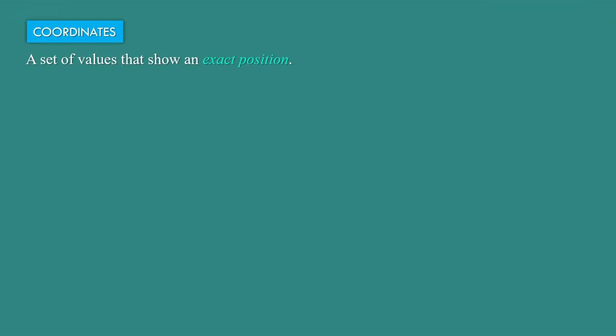Degree of Freedom. At first, we need to know about coordinates. A set of values that show an exact position is coordinates. If we consider a point P in a two-dimensional coordinate system, then to find the position of this point P, we have to draw two mutually perpendicular lines given by OX and OY. OX is the X-axis and OY is the Y-axis. To find the position of point P, we move along the X-axis and then along the Y-axis, and then we can find the exact location of this point.